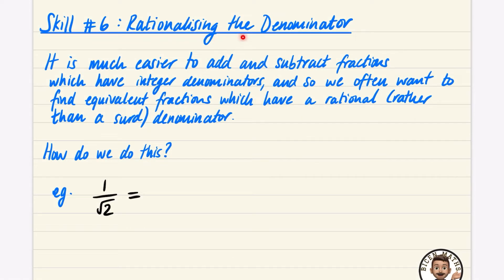Skill number six: rationalizing the denominator. It is much easier to add and subtract fractions which have integer denominators. This fraction does not have an integer denominator — it has an irrational one. We often want to find equivalent fractions which have a rational rather than an irrational denominator. When you have one over root two, the denominator is currently irrational. The opposite of being rational is irrational. Rationalizing the denominator means making it rational — essentially an integer.